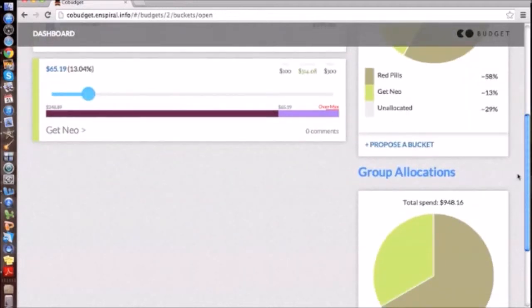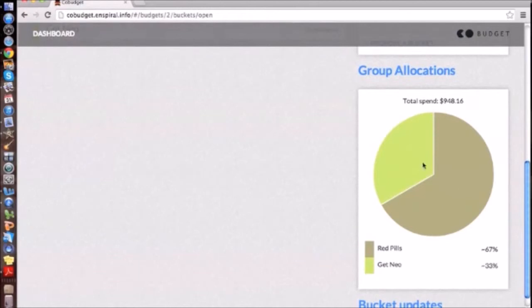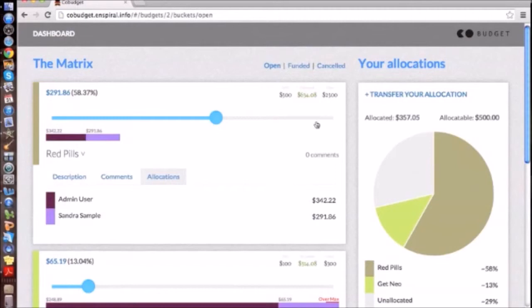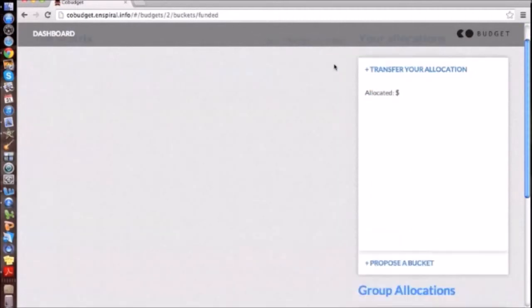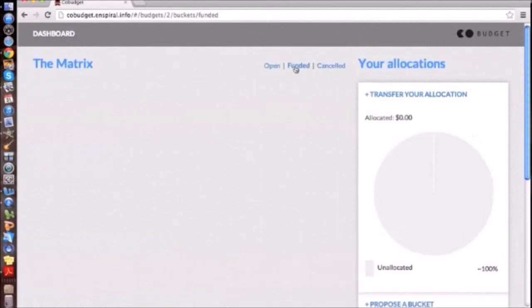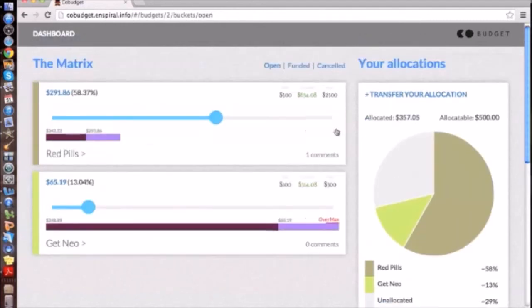I can propose a bucket very easily. I can look into the group allocations to see how much everyone has spent together. I can have a look at funded buckets and cancelled buckets to see what has been created and funded and what just didn't make it. So that's it. That's co-budget and we're looking forward to changing the world.